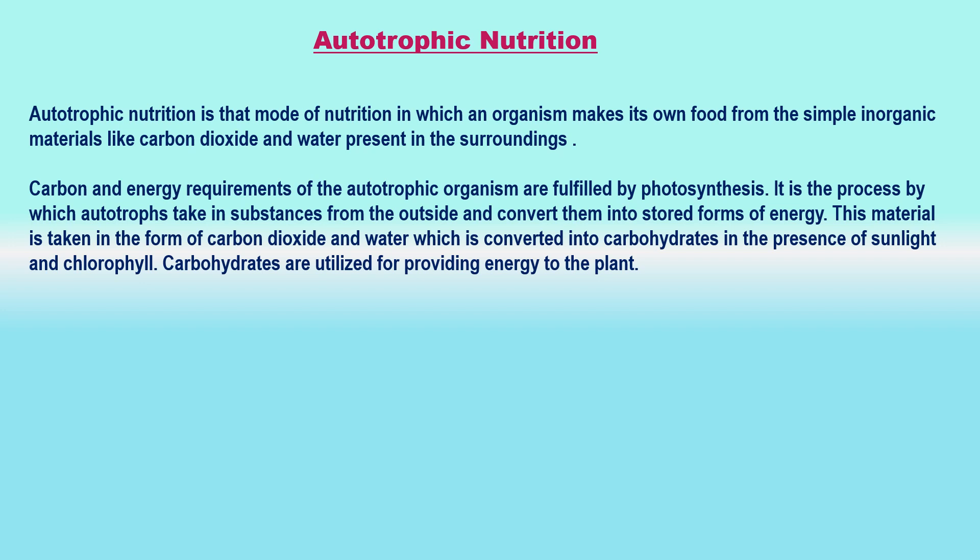Autotrophs contain the green pigment called chlorophyll, which is capable of trapping sunlight energy. This trapped sunlight energy is utilized by autotrophs to make food by combining inorganic materials like carbon dioxide and water by the process of photosynthesis. Thus, autotrophs make their own food by photosynthesis, so autotrophs are the producers of food. The food produced by autotrophs — green plants — is also used by human beings and many other animals.